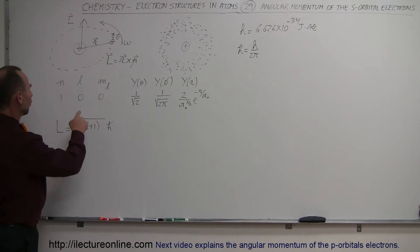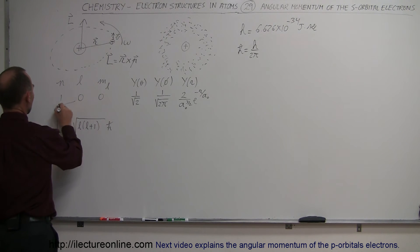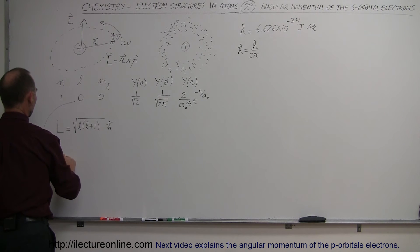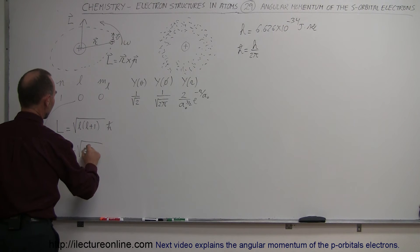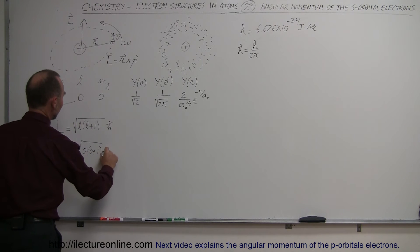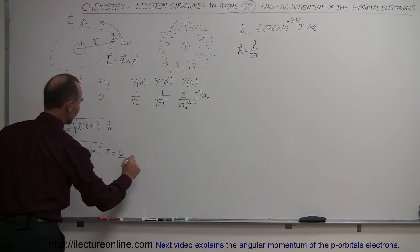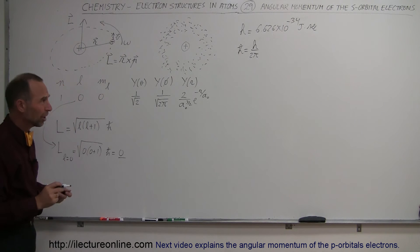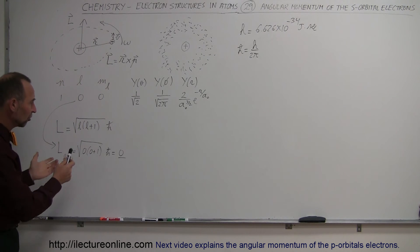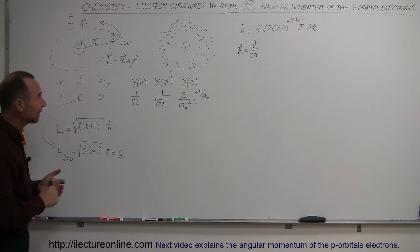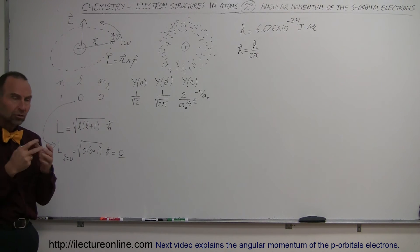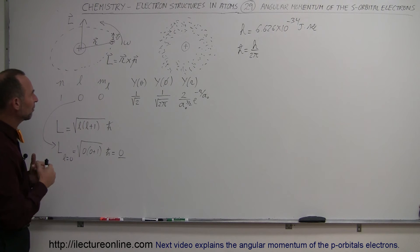When L=0, for this particular case, L equals the square root of 0 times (0+1) times h-bar, which is simply equal to 0. In other words, using these equations and solving the Schrödinger equation, the angular momentum of the electron in the s-orbital is equal to 0. In fact, this indicates that the angular momentum of any s-orbital would be equal to 0.